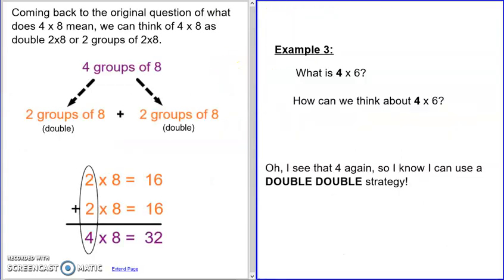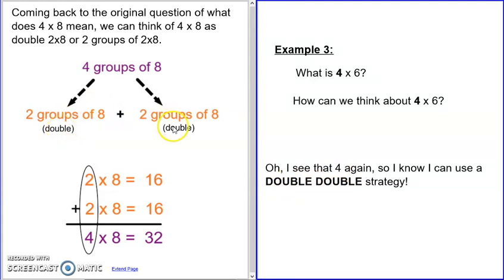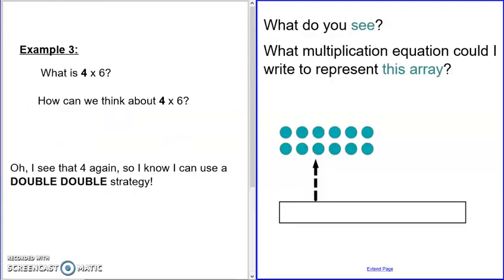One last example: four times six. We're thinking, how could we think about four times six? Visualize that in your mind. I see that four again — that tells me I can use the double-double strategy, just like we did before. So we start with the first double.